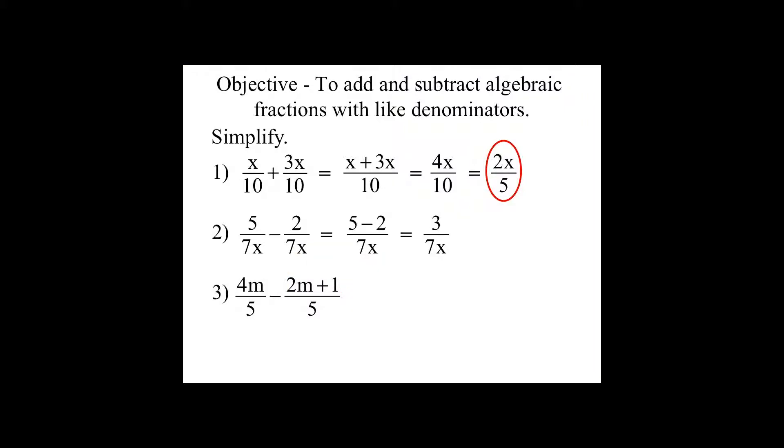So let's try it. 4m minus the quantity of 2m plus 1, all over 5. I distribute my negative and I end up with 4m minus 2m minus 1. And when I simplify it, I get 2m minus 1 all over 5.